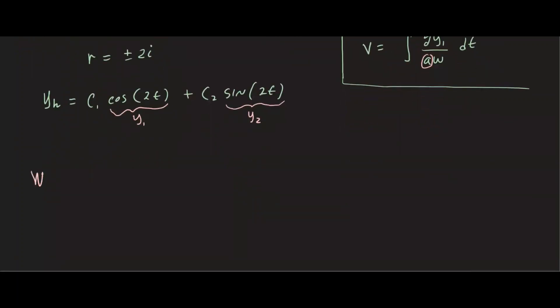So let's compute the Wronskian. The Wronskian of the solution y1, y2 is this determinant. We have cosine of 2t, sine of 2t, and then derivatives on the second row. So we have negative 2 sine 2t and then 2 cosine 2t.